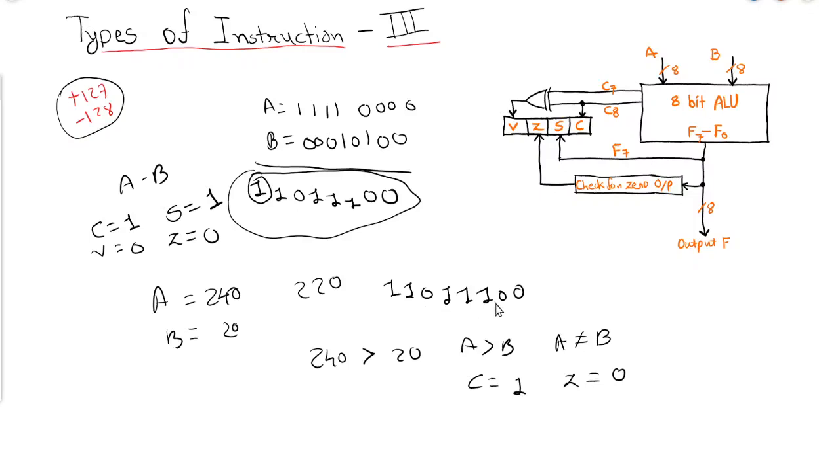If you are using three instructions, let's say branch if higher BHI, branch if higher or equal, and branch if not equal. All these three instructions with this kind of arithmetic operation will result in the branch.